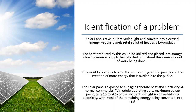The solar panels exposed to sunlight generate heat and electricity. A normal commercial photovoltaic module operating at its maximum power point converts only 15% to 20% of the incident sunlight into electricity, with most of the remaining energy being converted into heat.